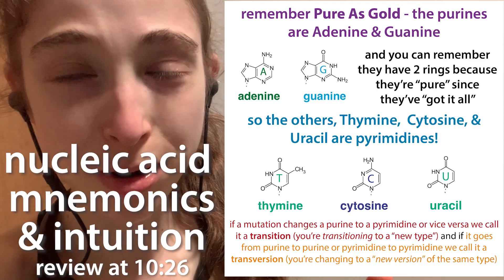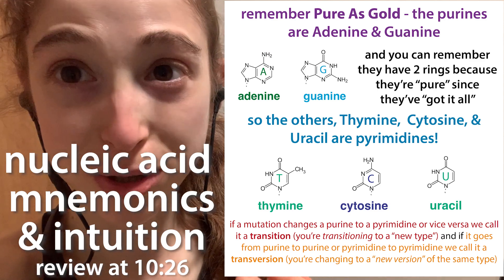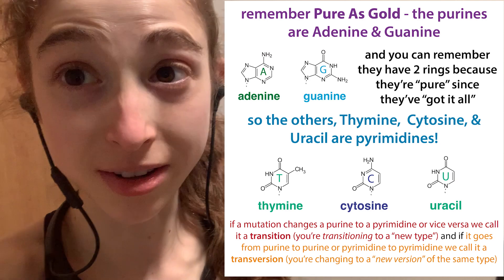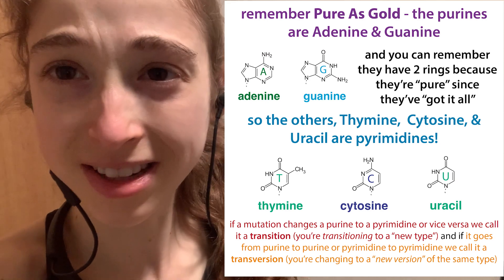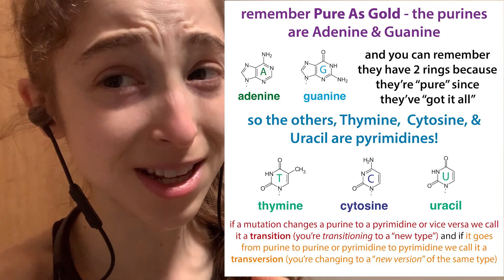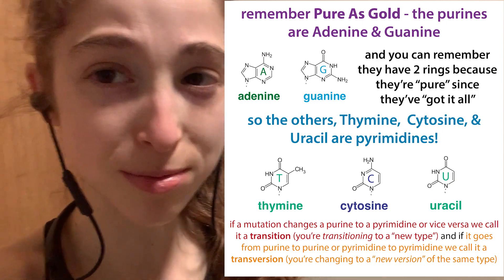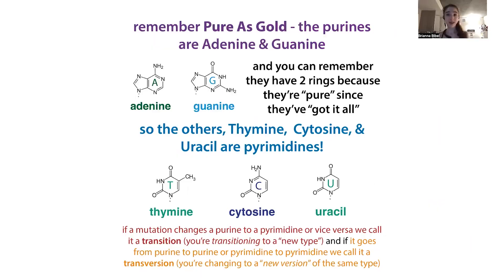Clay Gastro mnemonics — some hopefully helpful memory tricks to help you remember terminology regarding RNA and DNA, all out of the pureness of my heart, which you might say is pure as gold, which brings me to my first mnemonic: the purines are adenine and guanine.